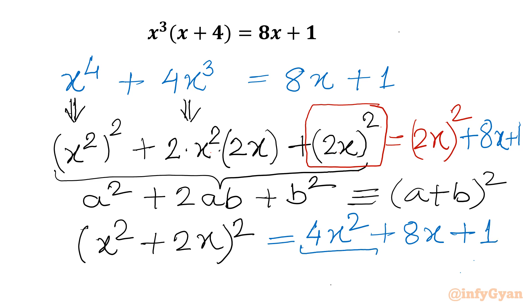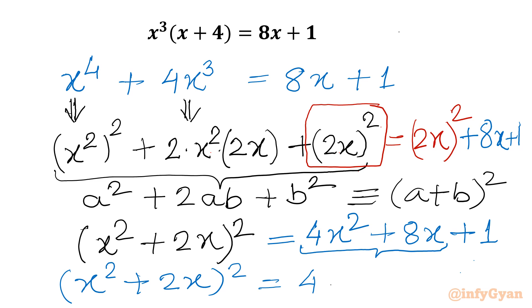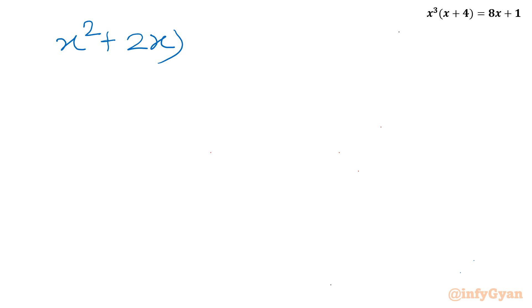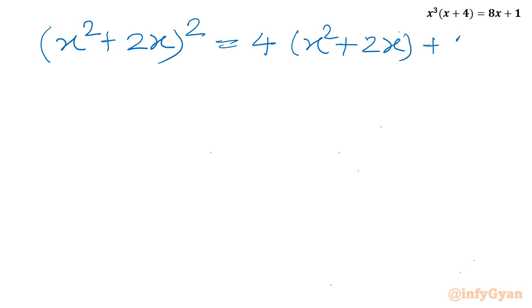Now I will take 4 common from these two terms — 4x squared plus 8x — so I can write x squared plus 2x whole square equal to 4 times x squared plus 2x, plus 1. Now we can use substitution. I will write x squared plus 2x whole square equal to 4 times x squared plus 2x, plus 1. Let us consider x squared plus 2x equal to A.